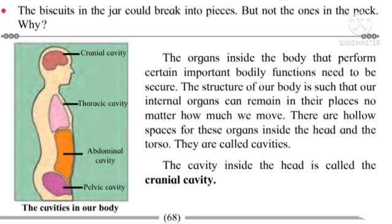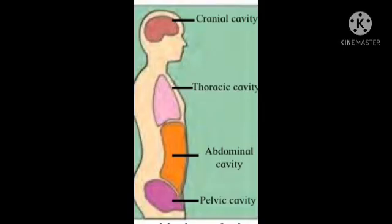There are hollow spaces for these organs inside the head and the torso, and they are called cavities. The cavity inside the head is called the cranial cavity. The cavity in the torso has three parts: the cavity in the chest is called the thoracic cavity. The cavity inside the abdomen has two parts — the abdominal cavity and the pelvic cavity. All the internal organs of the body are situated in these cavities, so they cannot leave their place and move around.